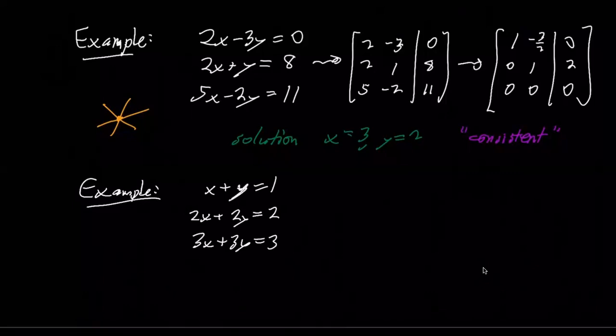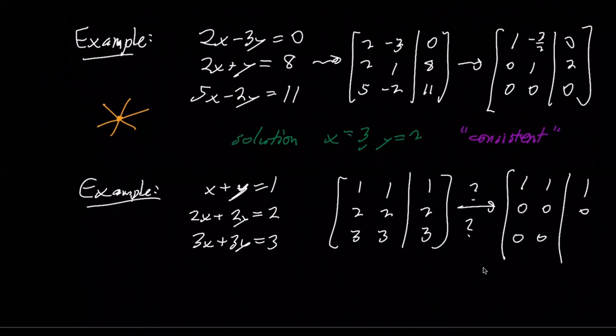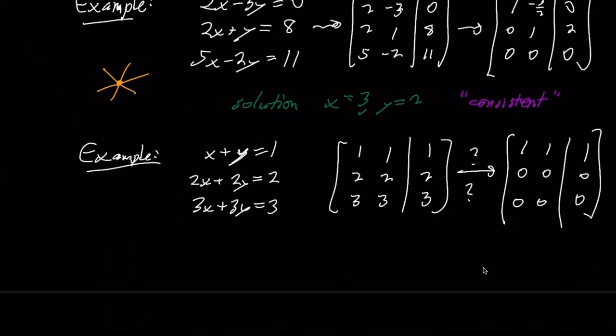One thing to think about is what does the reduced form look like? I claim, and you should verify this, that in fact, you just need to really change the second and third row and you'll end up getting something like this. I claim that's what's going to happen. And so in fact, this has infinitely many solutions because really it's the same line three times. If I want to think about it geometrically, it's the same line three times. And this has infinitely many solutions and it's also consistent.